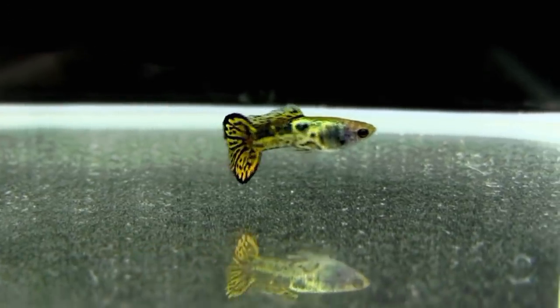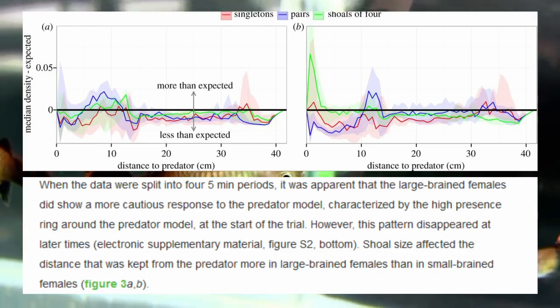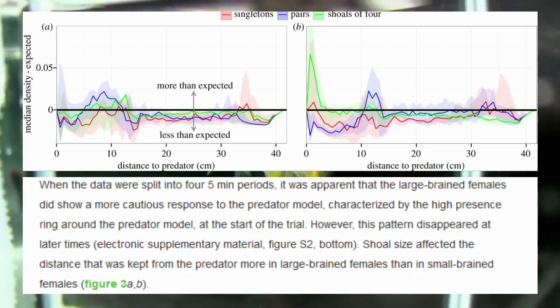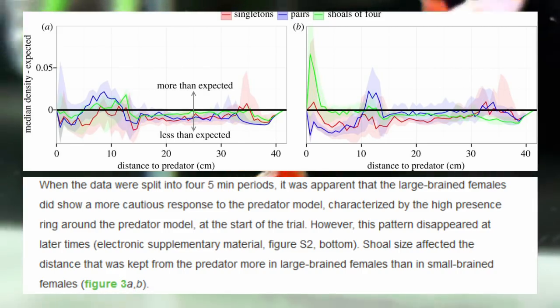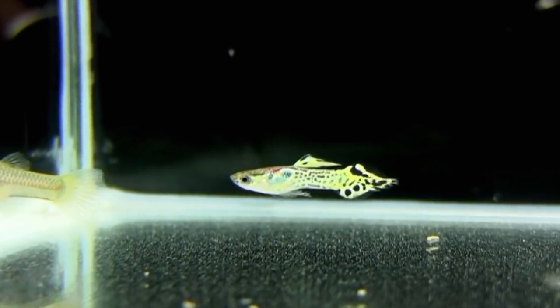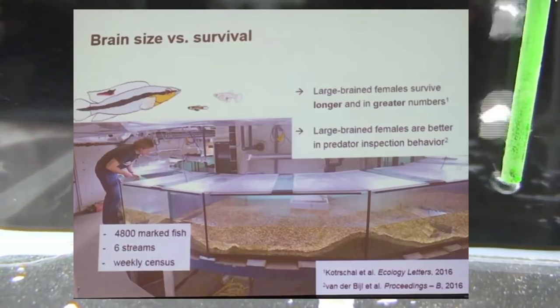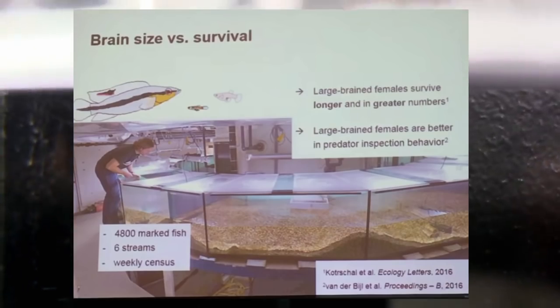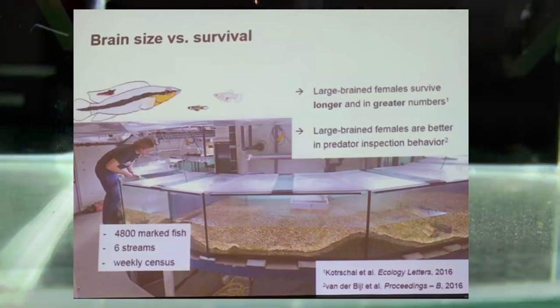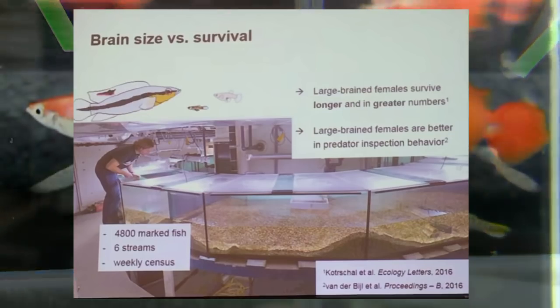The other really interesting thing was analyzing distance over time, which this graph does here, A being the small-brained females and B being the large-brained females. And you can see that the larger-brained females did show a more cautious response to the predator model in the beginning, but as time goes on, that pattern disappears. Which is pretty consistent with the heat maps that we just looked at. And then, perhaps rather unsurprisingly, all of these results were backed up by a live predator trial done using 4,800 guppies, put in a very large tank with one of their natural predators. Over the course of a week of observation, it was noted that larger-brained females survived longer and in greater numbers, and that larger-brained females were generally better at predator inspection behavior.